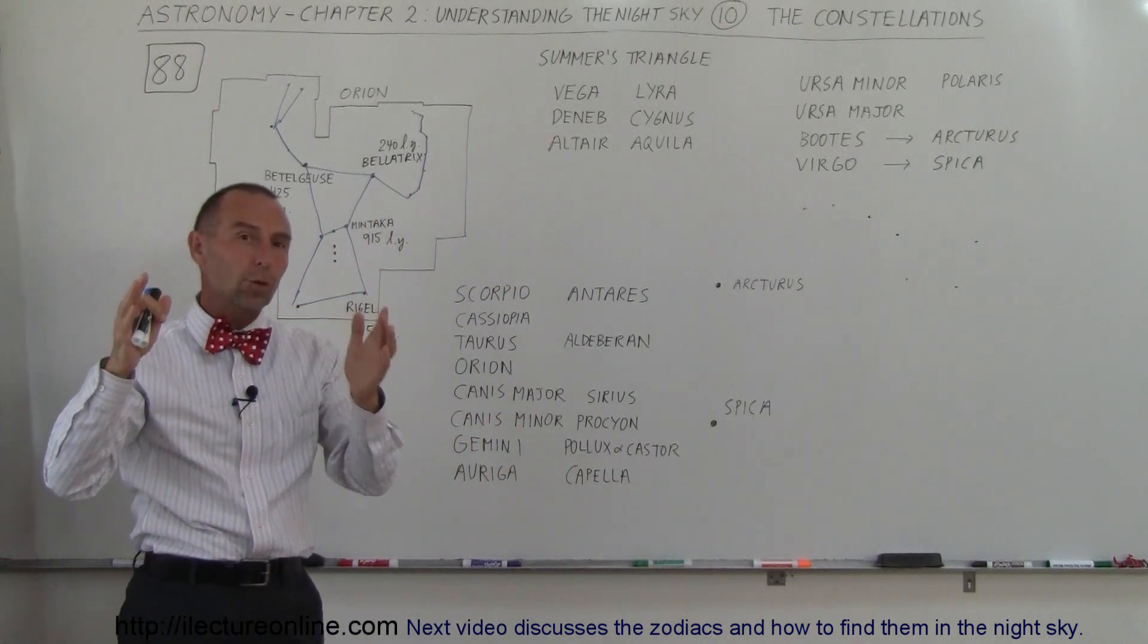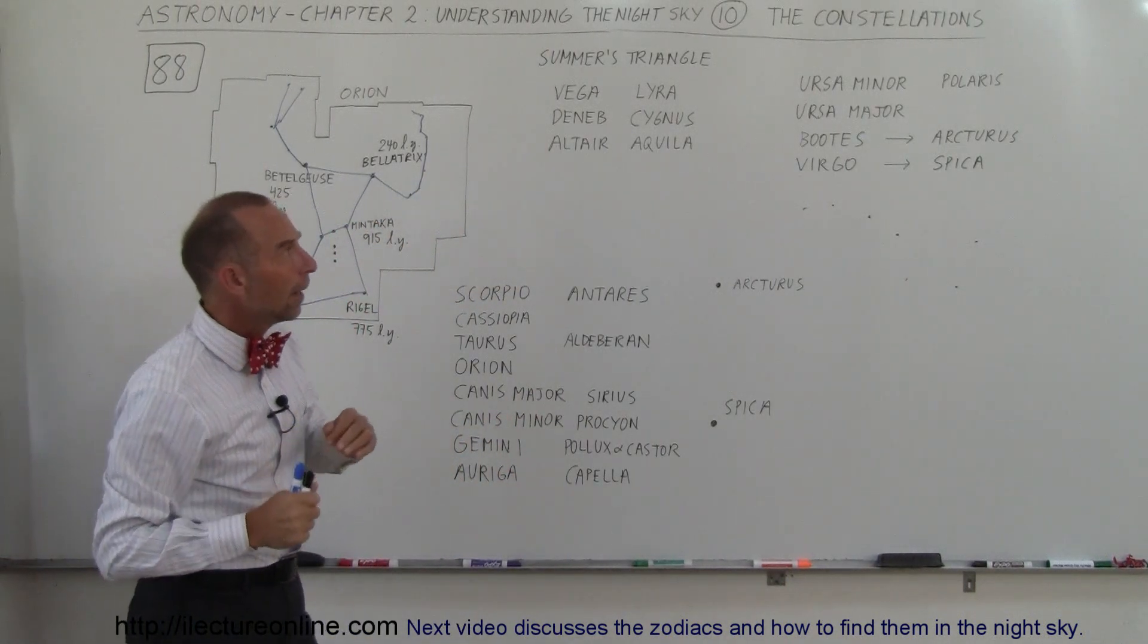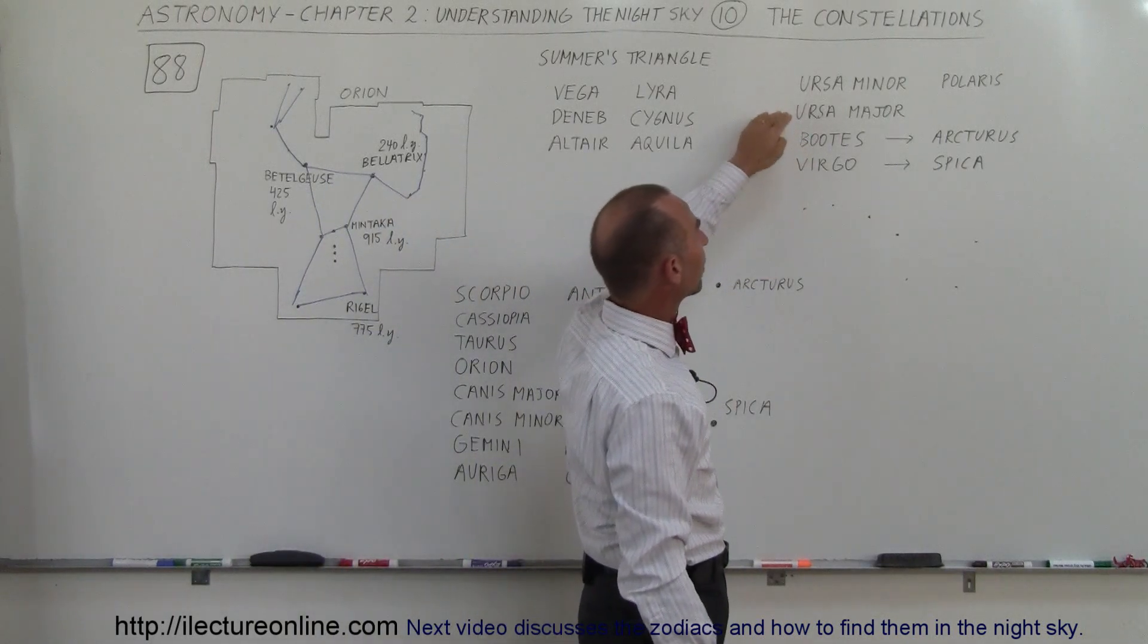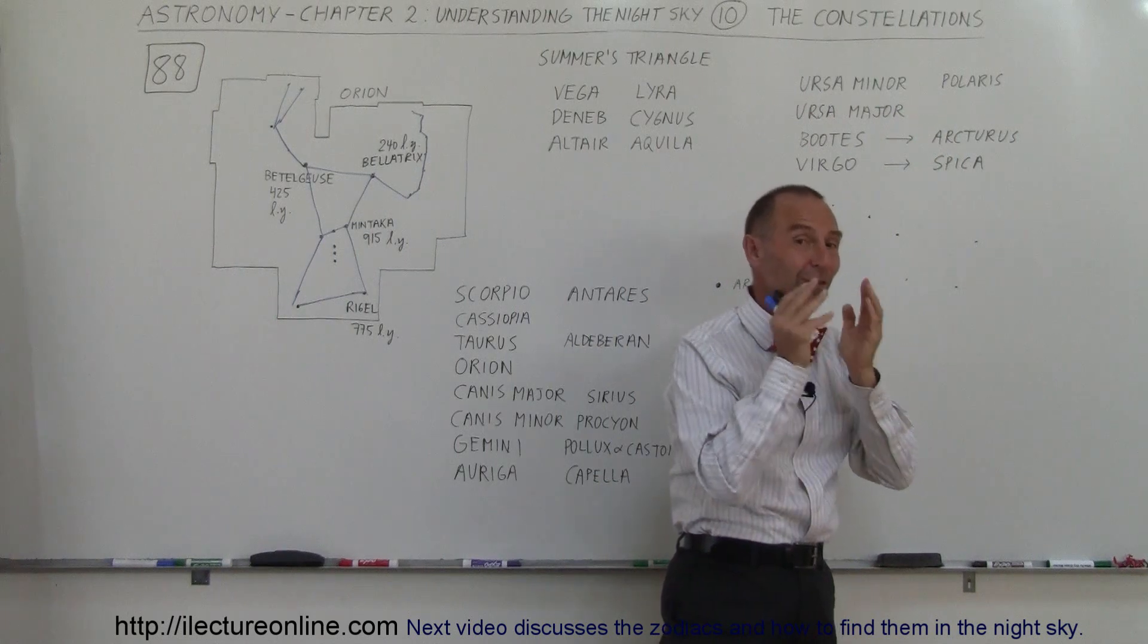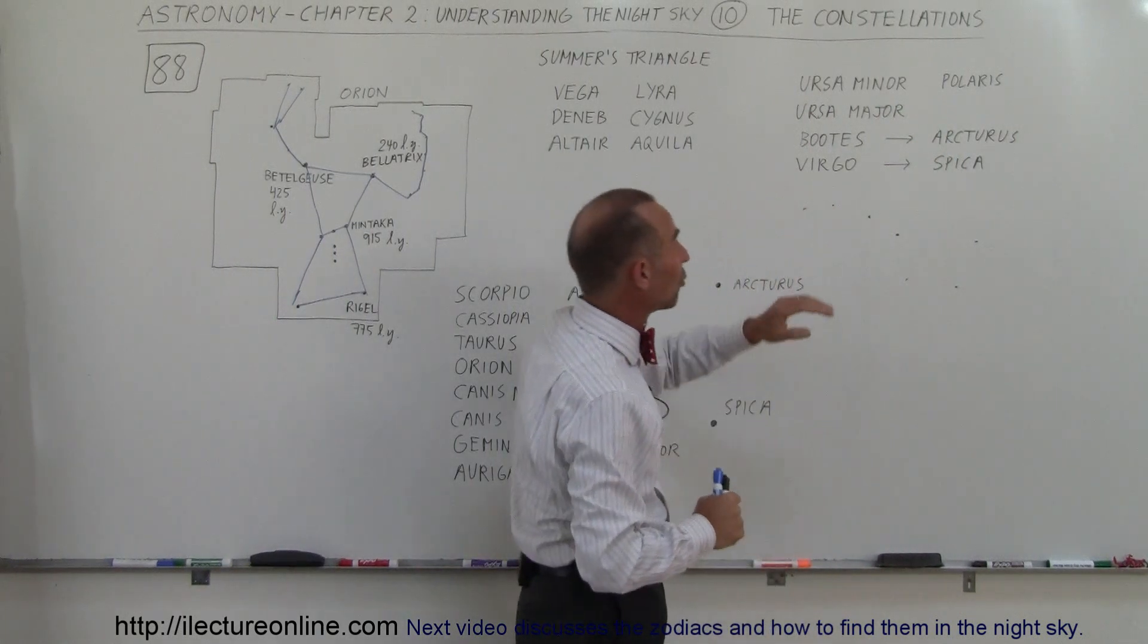If you look further north towards the North Star, then you'll see constellations like Ursa Minor and Ursa Major. Ursa Minor, the tip of it, that star is Polaris, the star that's almost directly towards the north.